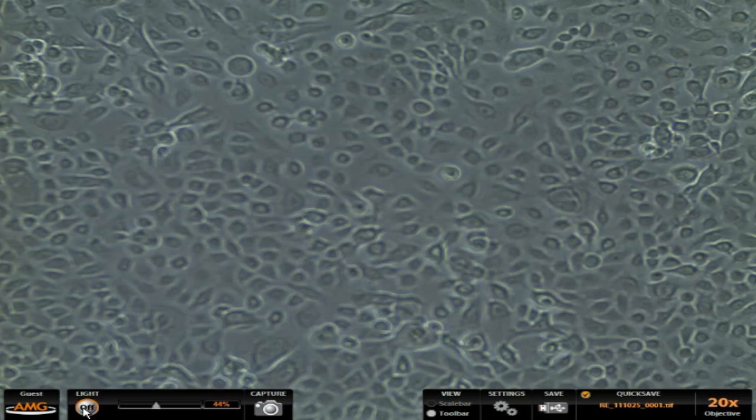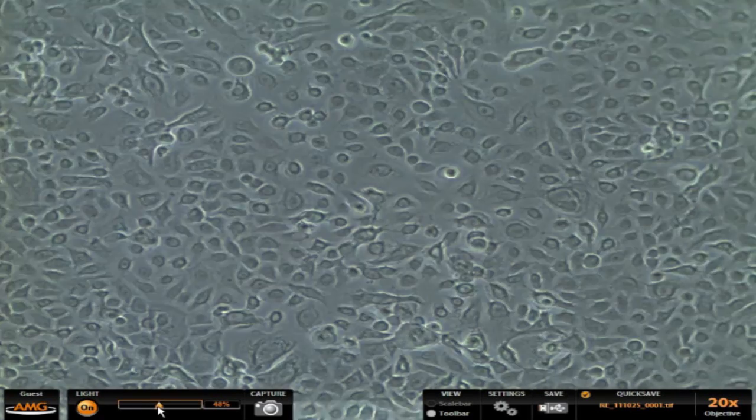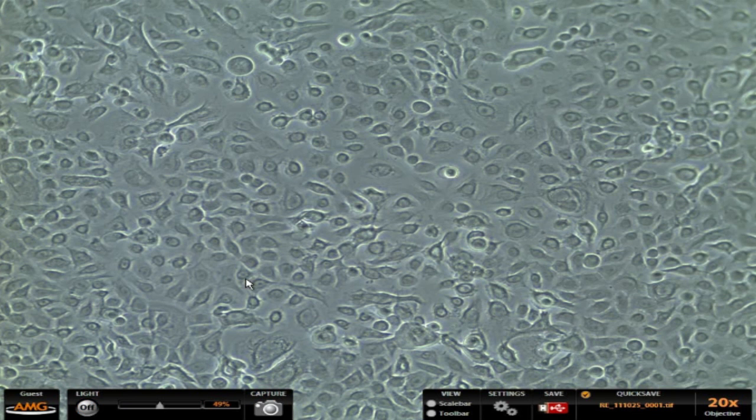Okay, to start, I'm just going to take my mouse and go down to this light button, turn on the light, focus, and maybe increase the brightness here by using this slider. That looks good. When I find a nice field of cells, I can click capture. And now that I've captured the image, I can do my cell counting.